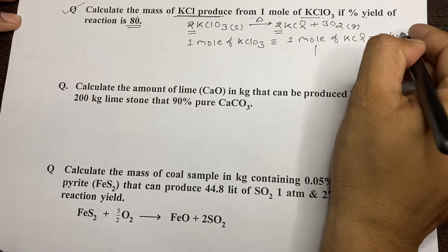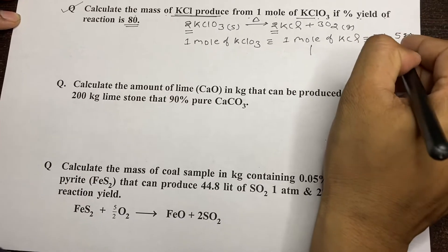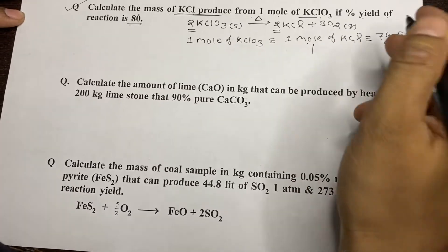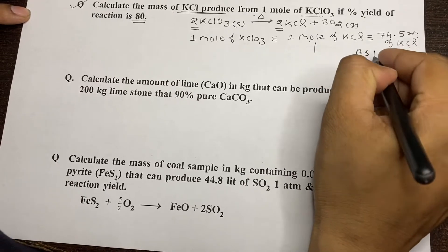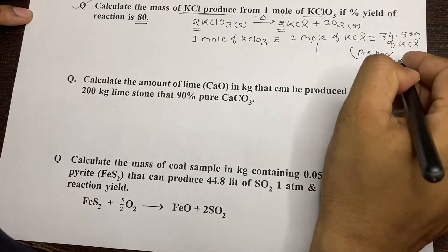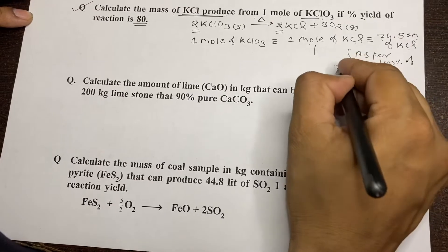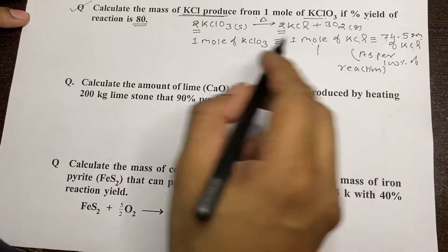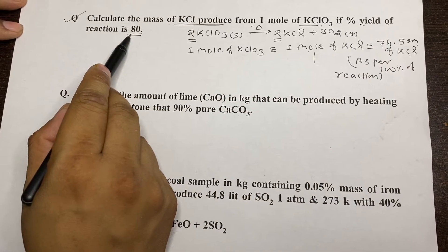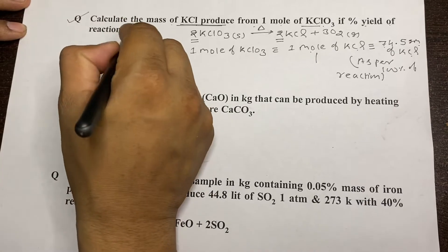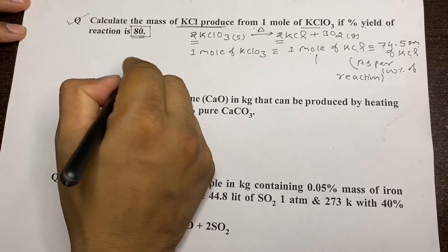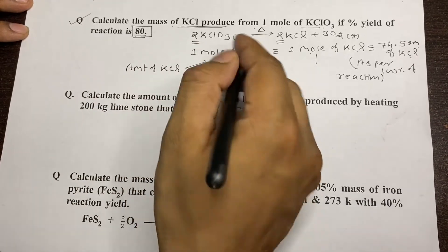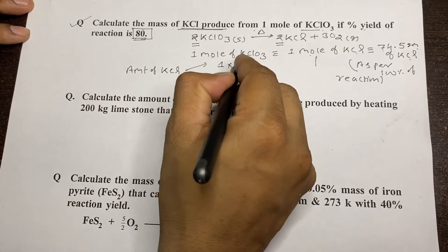One mole of KCl has a mass of 74.5 grams. This 74.5 grams is formed assuming 100% reaction — this is the theoretical yield. Since the percentage yield of the reaction is 80%, we calculate the actual amount as one mole of KClO₃ multiplied by 80%.